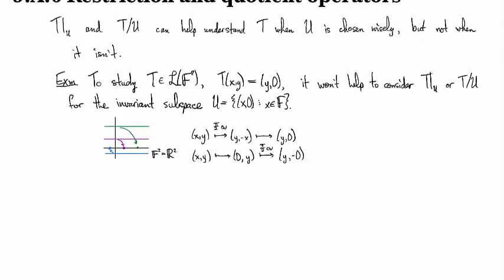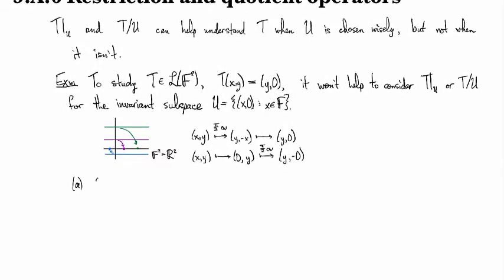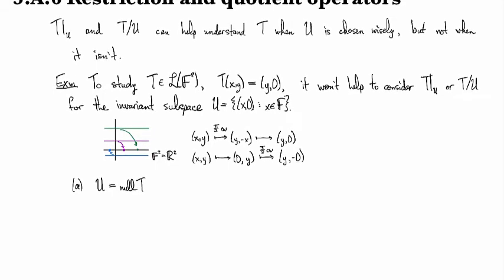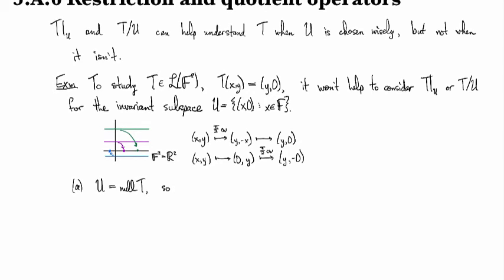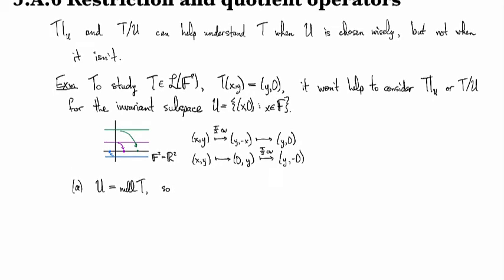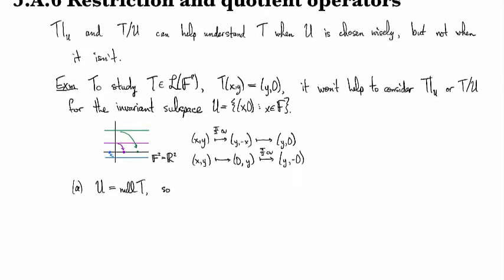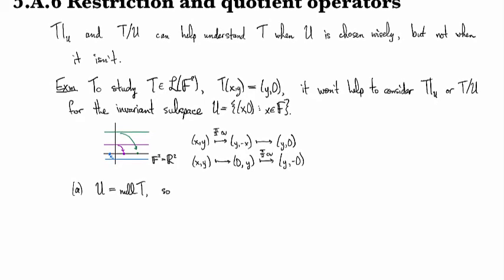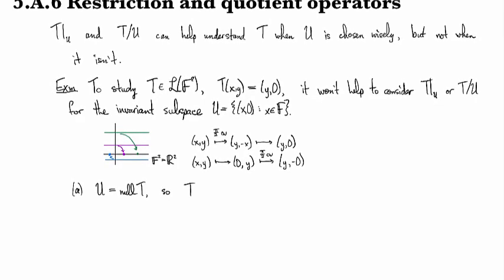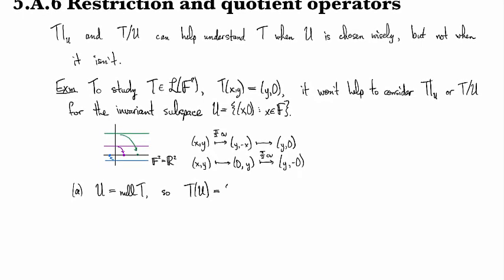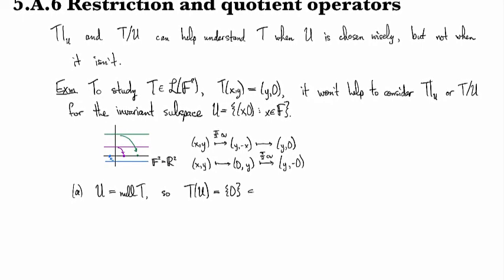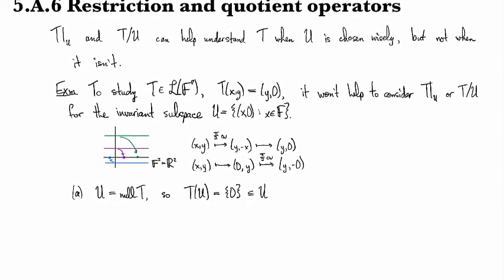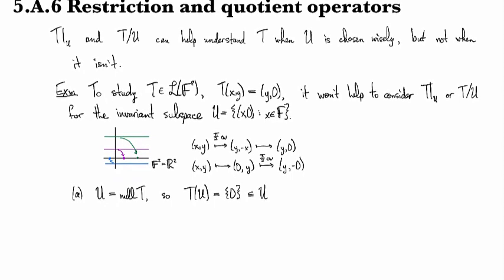So first off, U is the null space of T. Notice that if we start with the second coordinate equal to 0, then T just kills off the first coordinate and so definitely everything goes to 0. So if we look at T(U), this is the trivial space which is contained in U because U is a subspace. I'm just repeating here the proof that the null space is an invariant subspace.